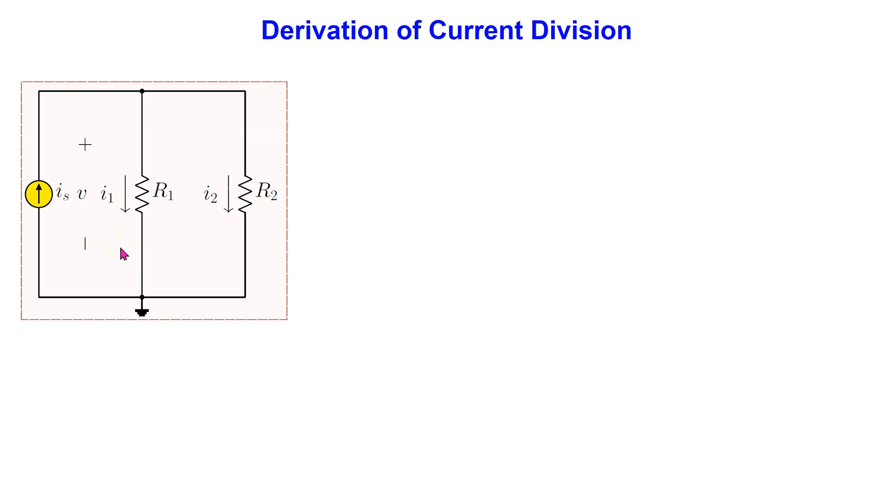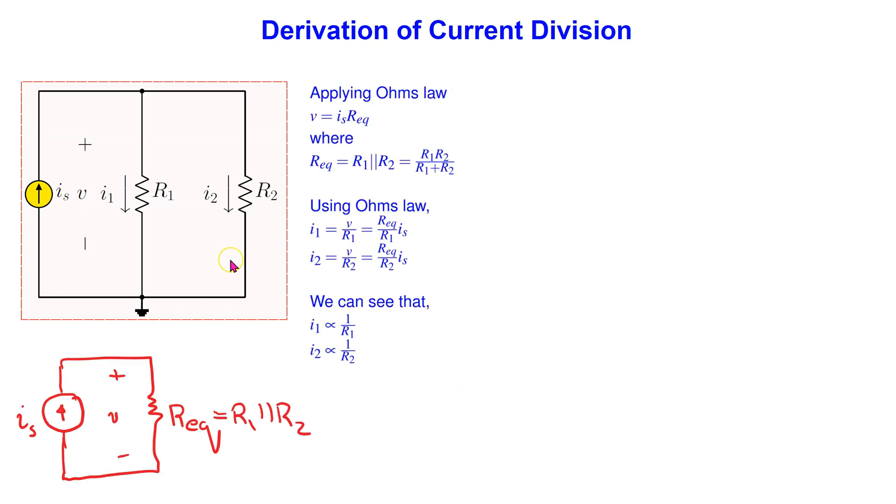Consider two resistors in parallel R1 and R2 connected to an ideal independent current source IS as shown. We can redraw this given circuit using an equivalent resistor as shown.